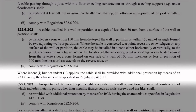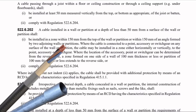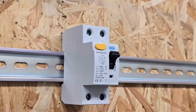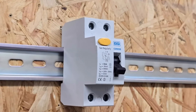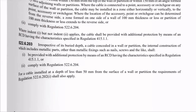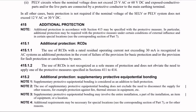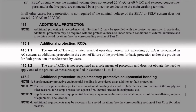Where indent one but not indent two applies, the cable shall be provided with additional protection by means of an RCD having the characteristics specified in regulation 415.1.1. So if our PVC insulated twin and CPC cable is buried less than 50mm deep in the wall and doesn't have extra mechanical protection, we need an RCD. This is so that if someone accidentally drills or nails into a cable, the RCD will protect them if they receive a shock. Regulation 415.1.1 confirms: RCDs with a rated residual operating current not exceeding 30 milliamps are recognised in AC systems as additional protection in the event of failure of basic protection.